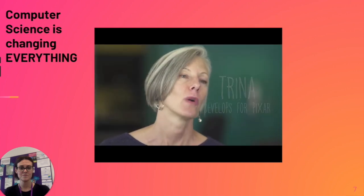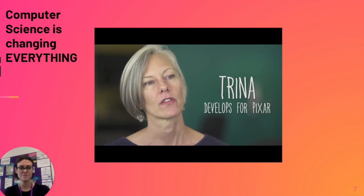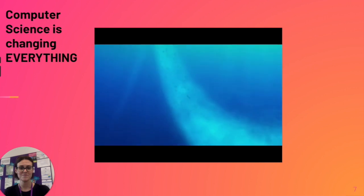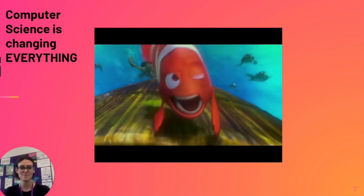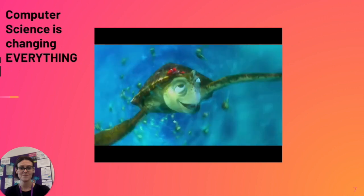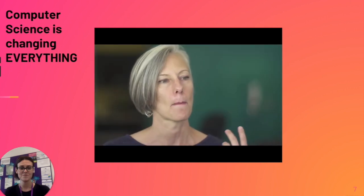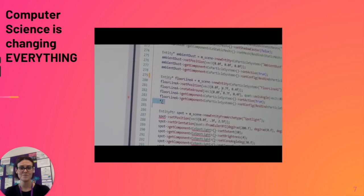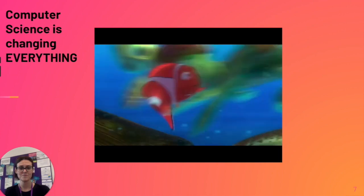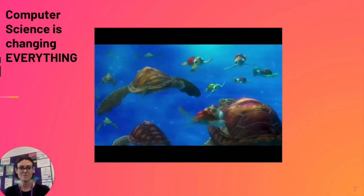In Finding Nemo, when Crush and Squirt and all the friends are flying through the East Australian Current, you're seeing images of water flowing by, the colors on the back of the turtle, the size of the fish—all generated through math and computer programs that we write. We give that to the artists and they create that final image, tweak it, and make it look beautiful.